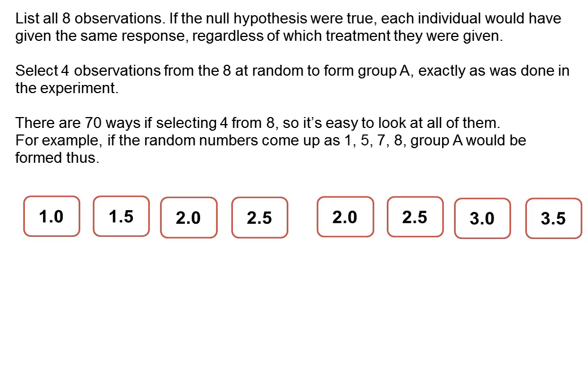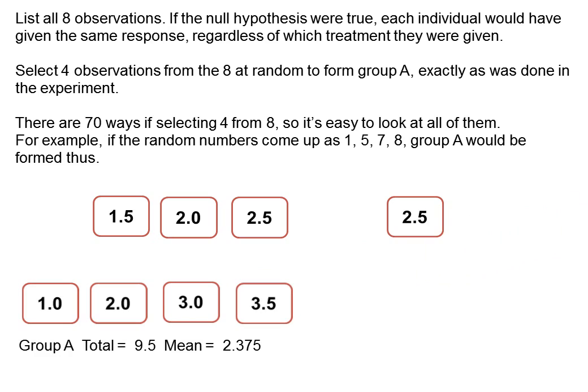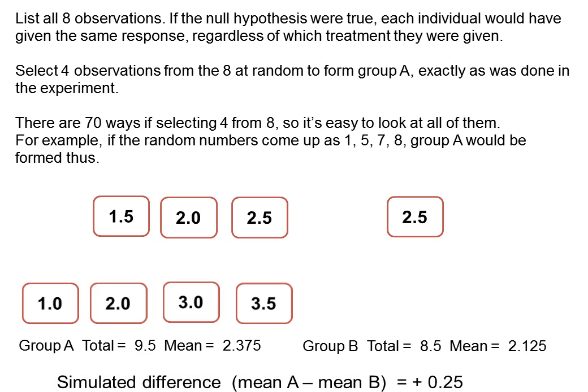Consider for another example, if the random numbers had come up as one, five, seven and eight, then group A would have been formed in this way: one, five, seven and eight. So for group A, the total is 9.5 and the mean is 2.375. And that means that for group B, the total is 8.5 and the mean is 2.125. So we get a simulated difference of mean of A minus mean of B of plus 0.25. That's in the opposite direction from the minus one that was actually observed.